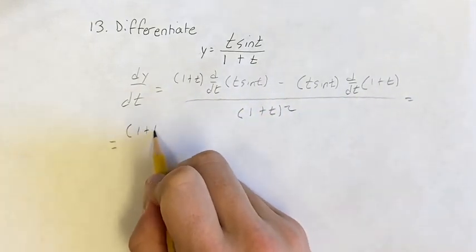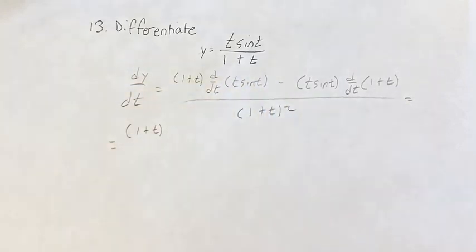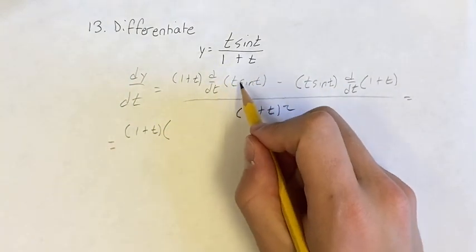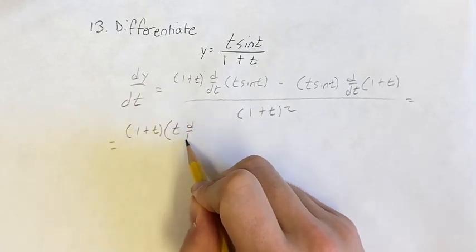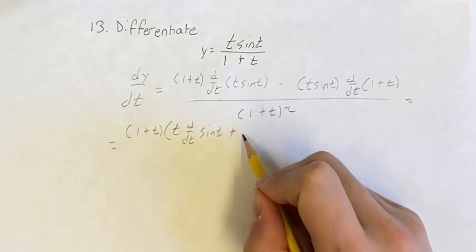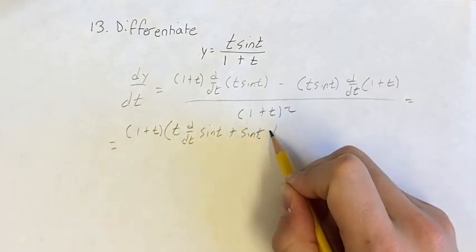So we have 1 plus t times the derivative of t sine t. We're going to have to use the product rule to find the derivative of this. So it's going to be t times the derivative of sine t plus sine t times the derivative of t.